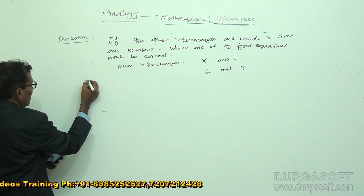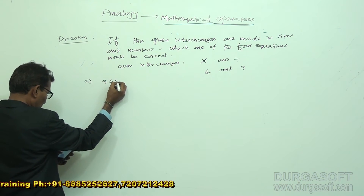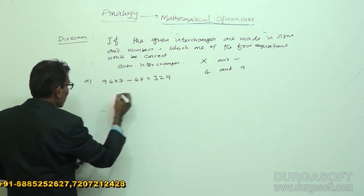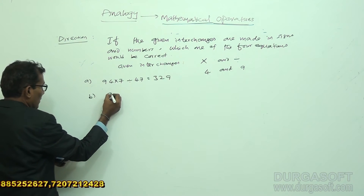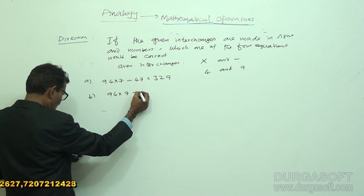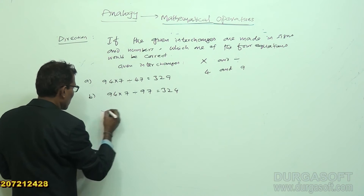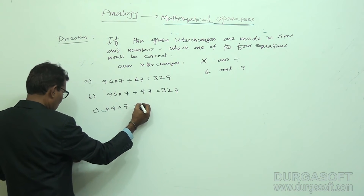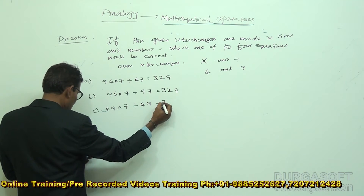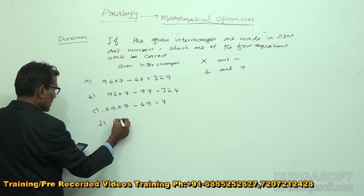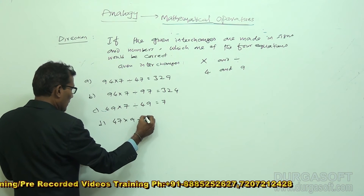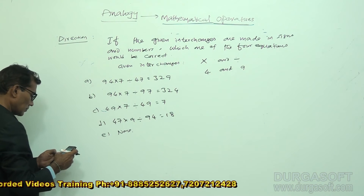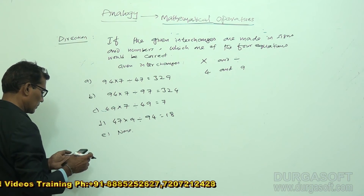The options are: Option A — 94 × 7 ÷ 47 = 329. Option B — 94 × 7 ÷ 97 = 324. Option C — 49 × 7 ÷ 49 = 7. Option D — 47 × 9 ÷ 94 = 18. There is also an option for 'None'.